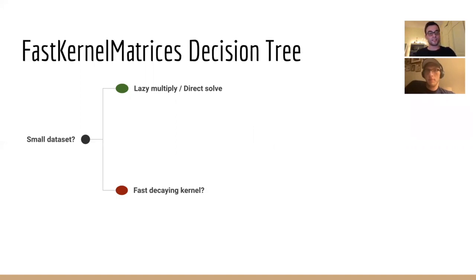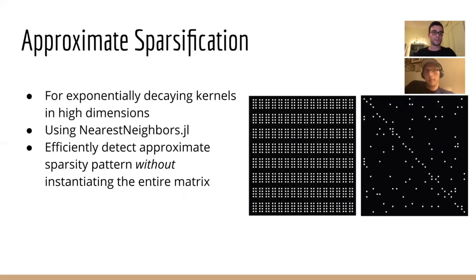But given a large dataset, we further check the following. So if the kernel decays quickly with respect to a distance measure like the Euclidean norm, then the corresponding kernel matrix is very likely approximately sparse with many entries close to, but not identical to zero. And for this reason, we attempt to create a sparse approximation to the matrix.